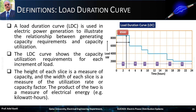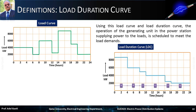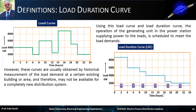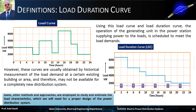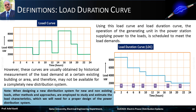For our example, the peak load is 8,500 kilowatts for a duration of 4 hours, and the base load is 2,000 kilowatts for a duration of 24 hours. Using the load curve and load duration curve, the operation of generating units is scheduled to meet load demands. However, these curves are usually obtained by historical measurement of load demands at an existing building or area, and may not be available for a completely new distribution system. When designing a new distribution system for non-existing loads, other methods and approaches are employed to study and estimate the load characteristics.